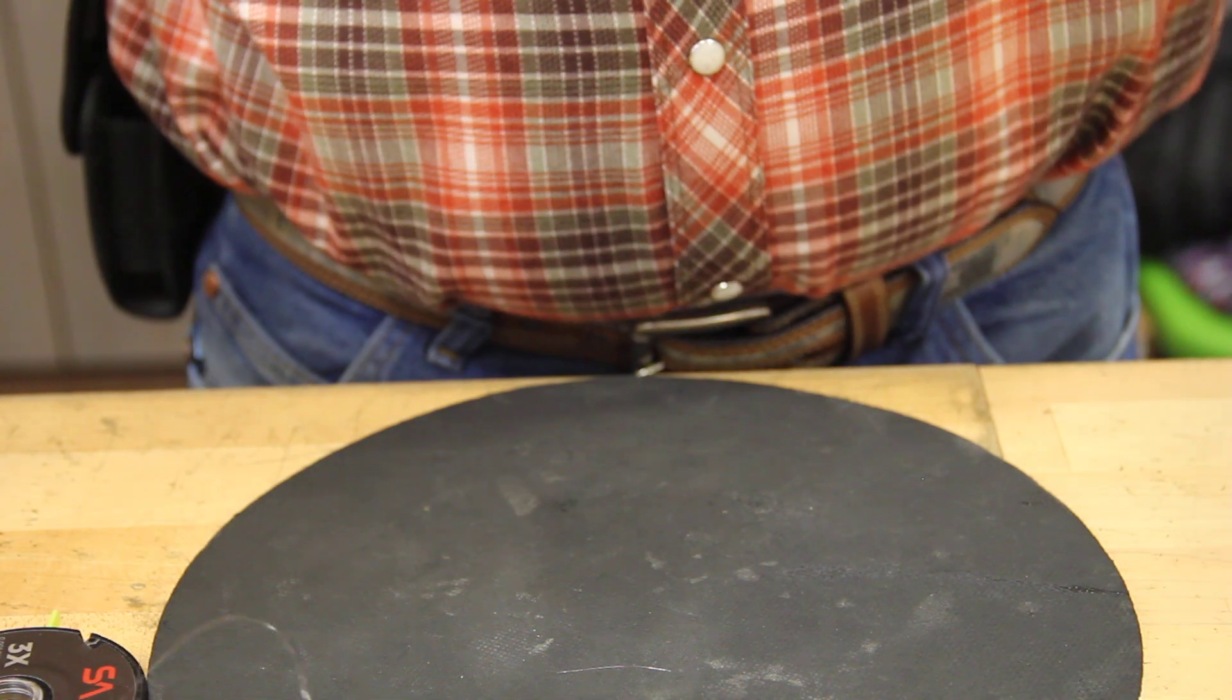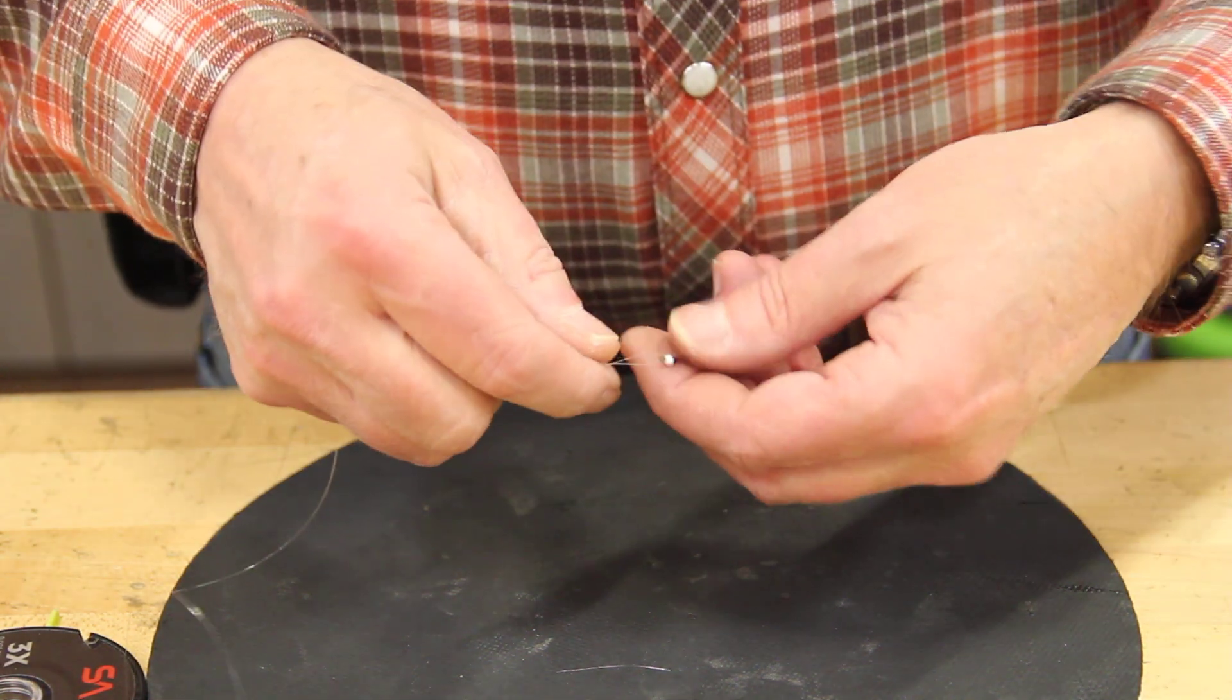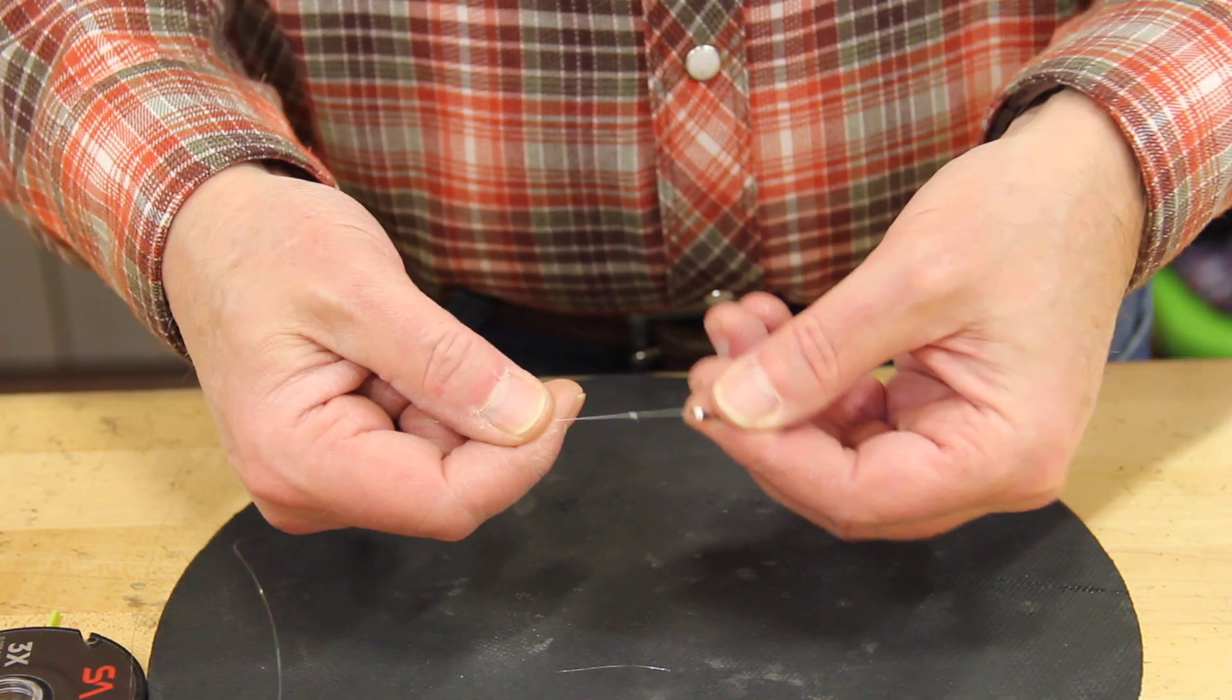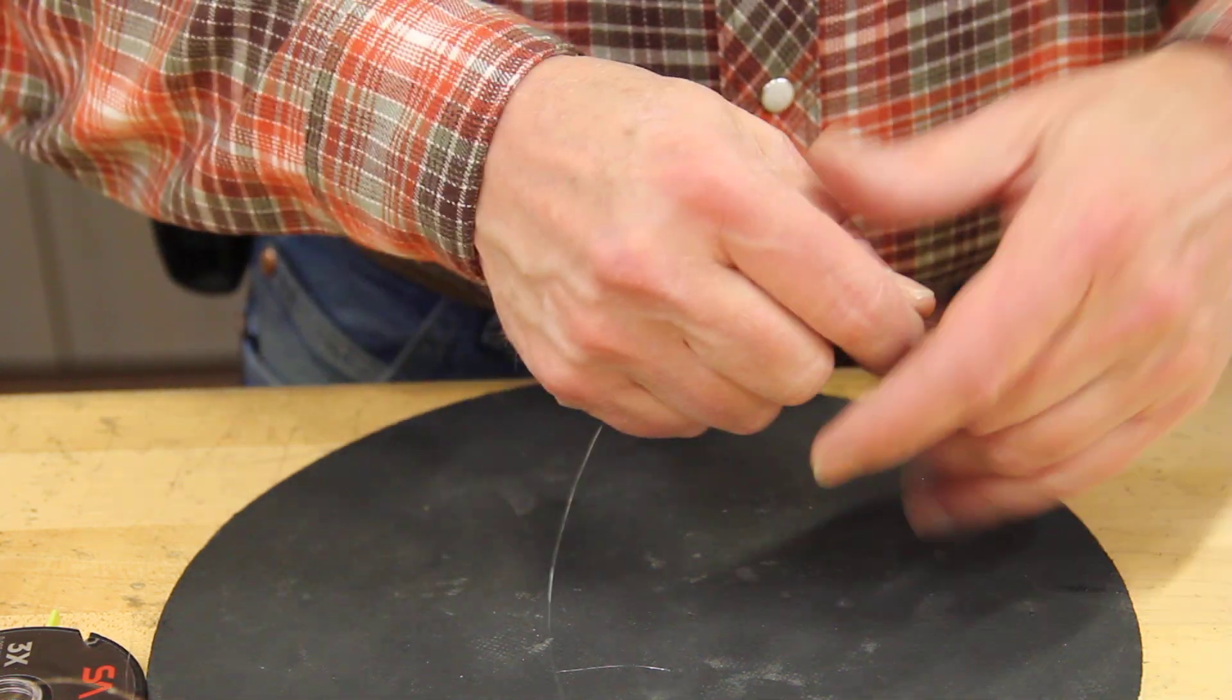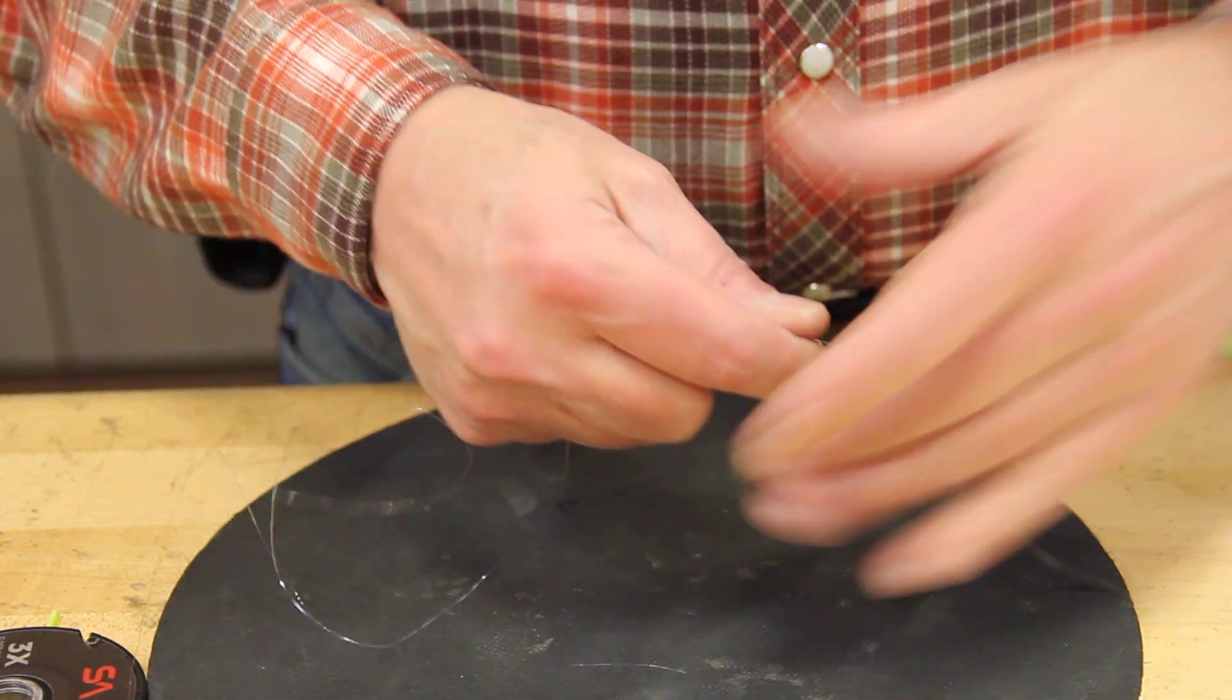There we go. I've already got a fly on there. And the thing is, usually when you're using, for me, I always use a loop knot on the end of that. So, there's your swivel right there.